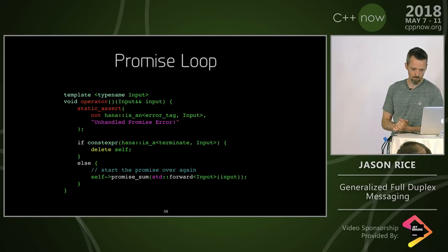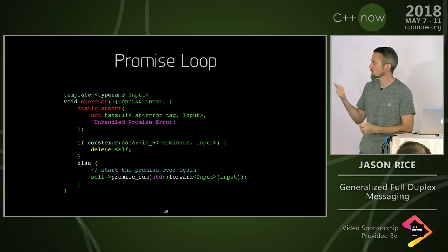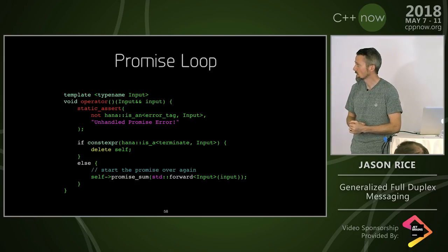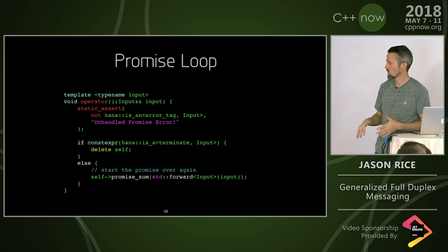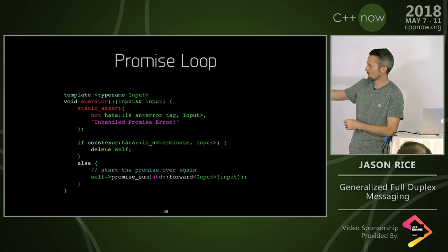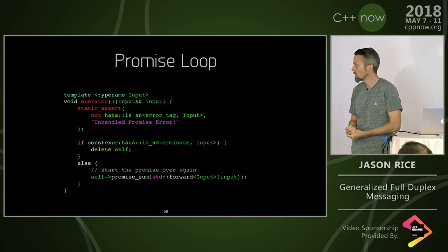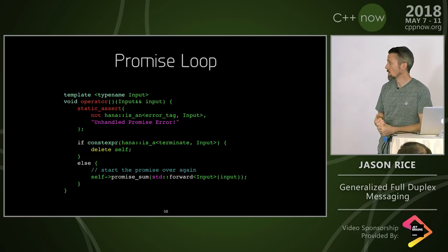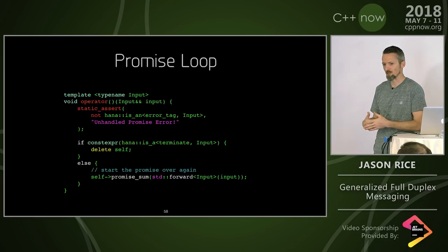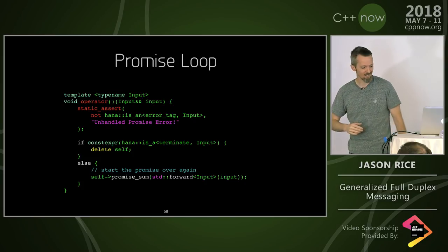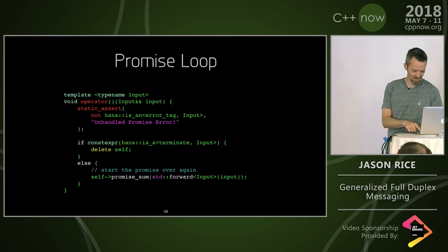At the end of the promise loop it's a little different. It does the same error handling and has to catch an error. If it's a terminate object, it's done — it can delete itself. Otherwise, the big blue blob implementation object just calls itself again with a new input value. If you don't have some kind of asynchronous operation, this could be an infinite recursive loop, so you have to give it some kind of resistance to prevent it from spinning out of control.